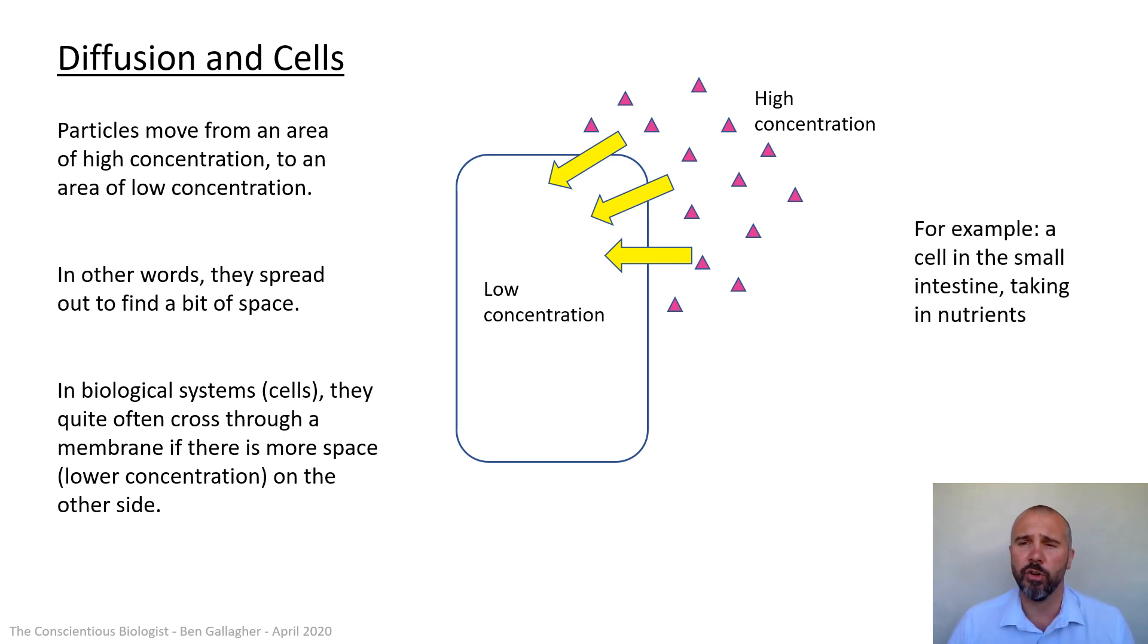Now that's what generally happens in cells. And one example of this diagram is in your small intestine. You've eaten your food, you've eaten your nutrients, you've digested them and broken them down to amino acids, glucose, lipids, all the other little nutrients that you've got. Those nutrients are in your small intestine at high concentration. So they're going to move by diffusion into the cells of the small intestine, where there was a lower concentration, and then from there on into the blood to be sent around your body.